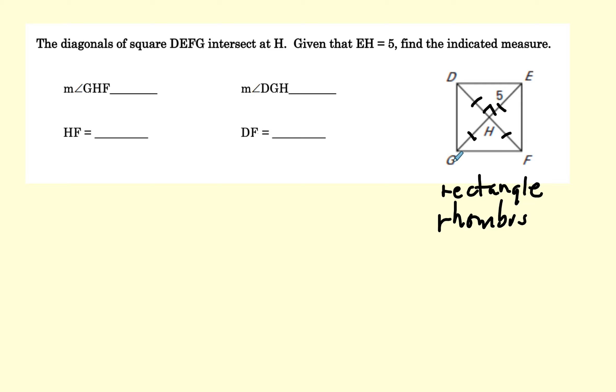Let's see, angle GHF. All right, that's 90 degrees. The diagonals are, that's part of the rhombus family. Angle DGH. We know that this is a rectangle, and we know that this is getting cut in half because of it being a rhombus. So this angle will be 45 degrees.